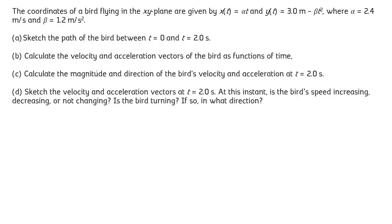In this question we have to: sketch the path of a bird between t=0 to t=2 seconds; calculate the velocity and acceleration vectors as a function of time; find the magnitude and direction of the bird's velocity and acceleration at t=2 seconds; sketch the velocity and acceleration at t=2 seconds; and show whether speed is increasing or decreasing and the direction of turning.